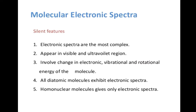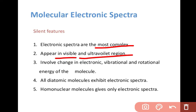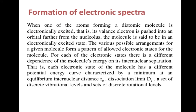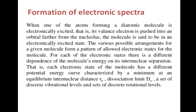Salient features of molecular electronic spectra: First, the electronic spectra are more complex because they are absorbed in the visible and ultraviolet region, and also involve a change in electronic, vibrational, and rotational energy of the molecule. All diatomic molecules exhibit electronic spectra. Homonuclear molecules — molecules made of the same type of atoms — give only electronic spectra.